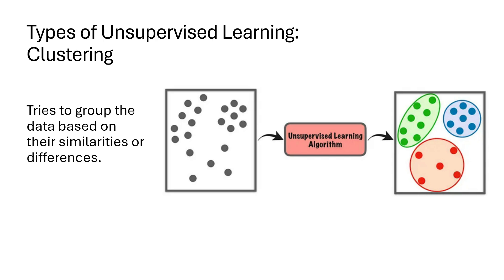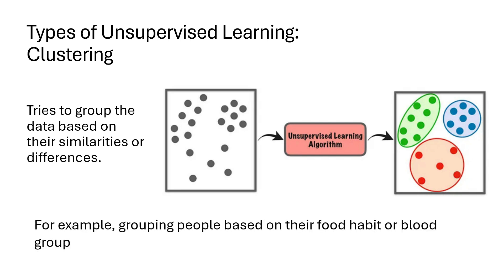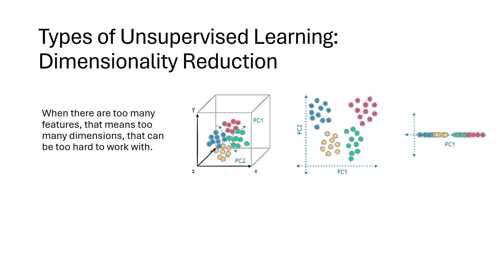The number of clusters can vary based on the dataset or based on how you want to group the data. A real-world example would be grouping people based on their food habits or their blood group — that can be a very good example of clustering.